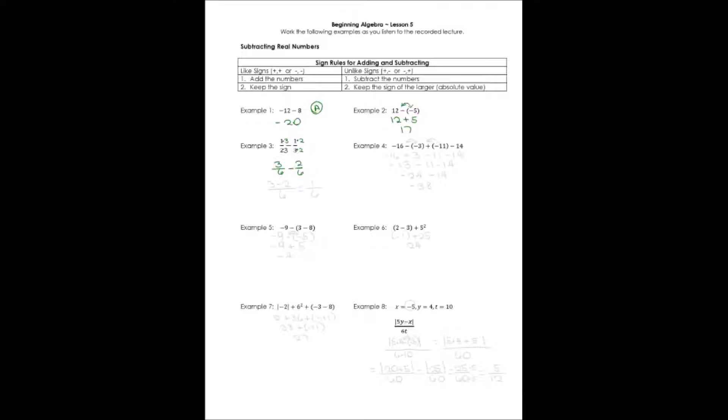Now I can write everything over that common denominator of 6. Everything else goes in the numerator. 3 minus 2, opposite signs. Remember, subtract and keep the sign of the larger, and the answer is 1 over 6.